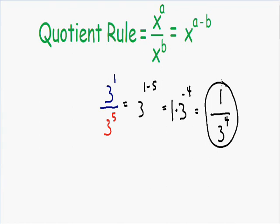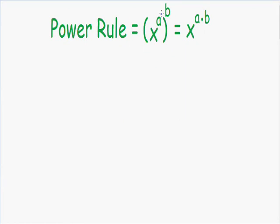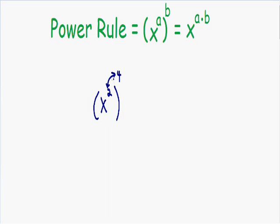Let's go over one more example and talk about the power rule. The power rule is used whenever you see two exponents directly on top of one another — you can simplify them by just multiplying the exponents. Let's say we had x squared all raised to the 4th power. We have our base of x and we multiply the exponents: 2 times 4 equals 8. So this expression simplifies to x to the 8th.